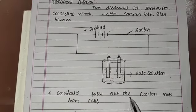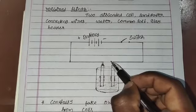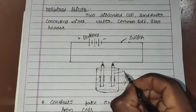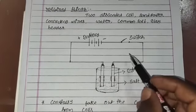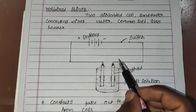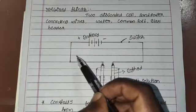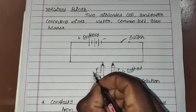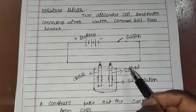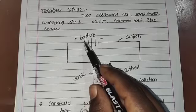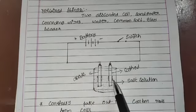The electrode connected to the negative terminal of the battery is called a cathode, and the electrode connected to the positive terminal of the battery is called an anode. When an electric current passes through the electrolyte — in this case the salt solution — these electrode names are important for understanding the process.